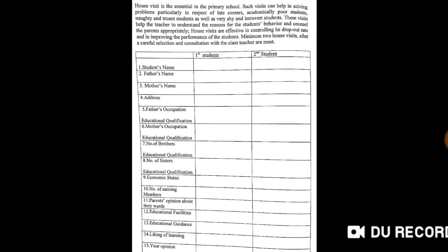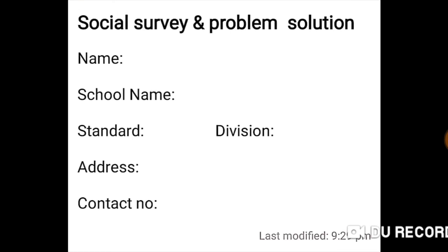In the beginning of the report, you can write this information: name of the student, school name, standard, division, address, and contact number. With this information you can collect and write a complete report on social survey and problem solution.